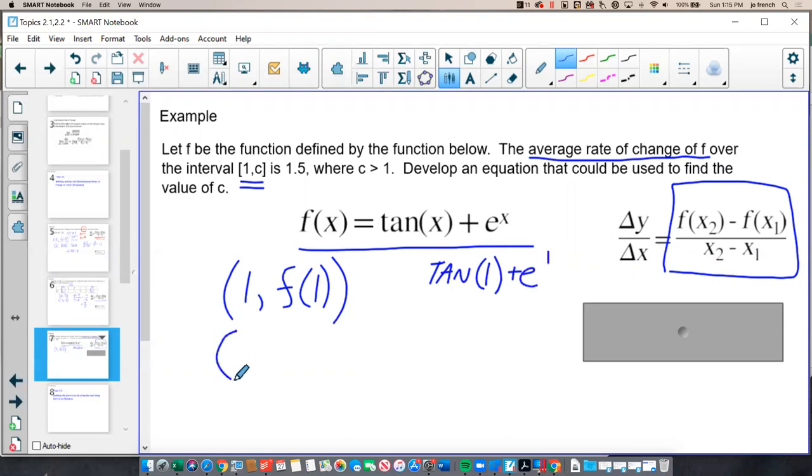And then my second point, the x value is c, which would mean that my y value, my output, would be f of c.